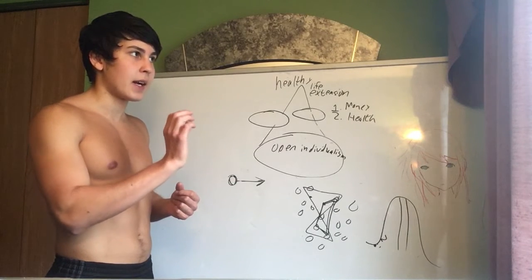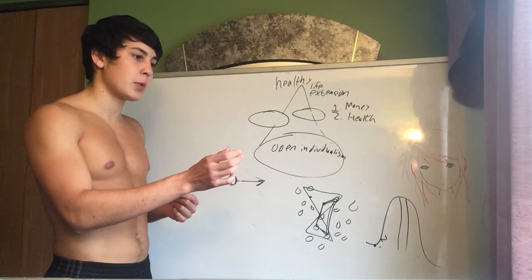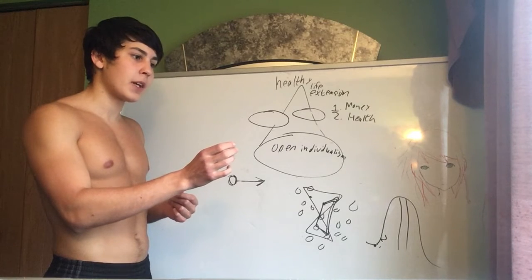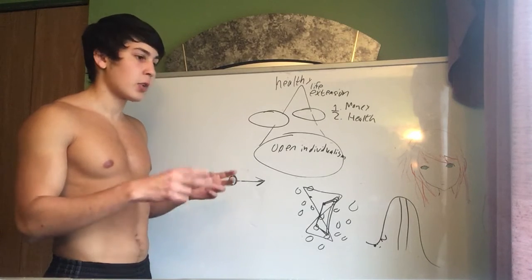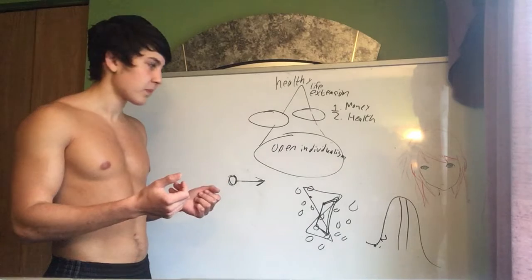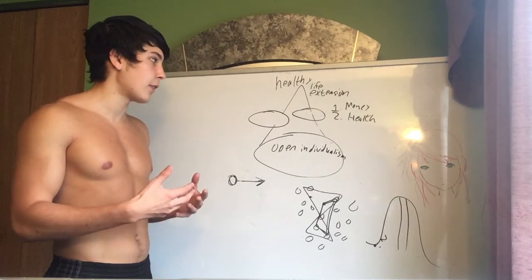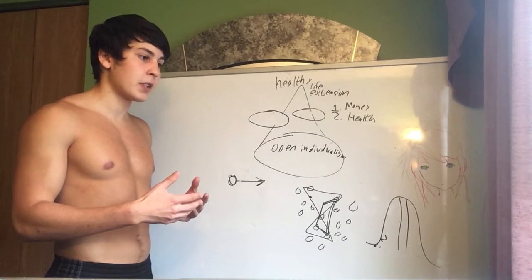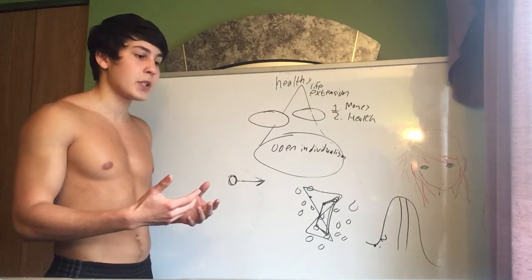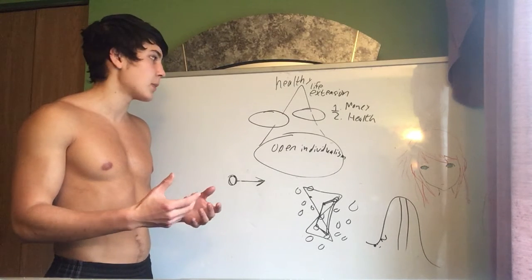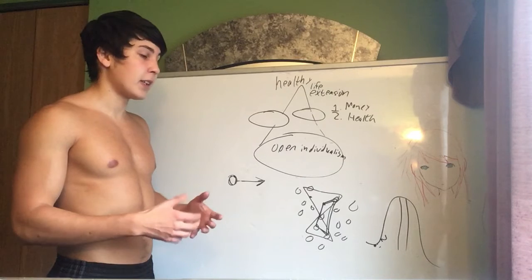So, for me, the next safety net that I see is roughly what is outlined by strategies for engineered negligible senescence. So, we want to create a future in which we are biologically 25 regardless of how much so-called time actually goes on. And the way to do this is by having clinics in which we periodically go to and have our rejuvenation therapies that include things such as breaking amyloid plaques in our brains and also just stem cell injections as well as perhaps updating our lysosomes with brand new enzymes that can degrade all the products that they can currently not break down.